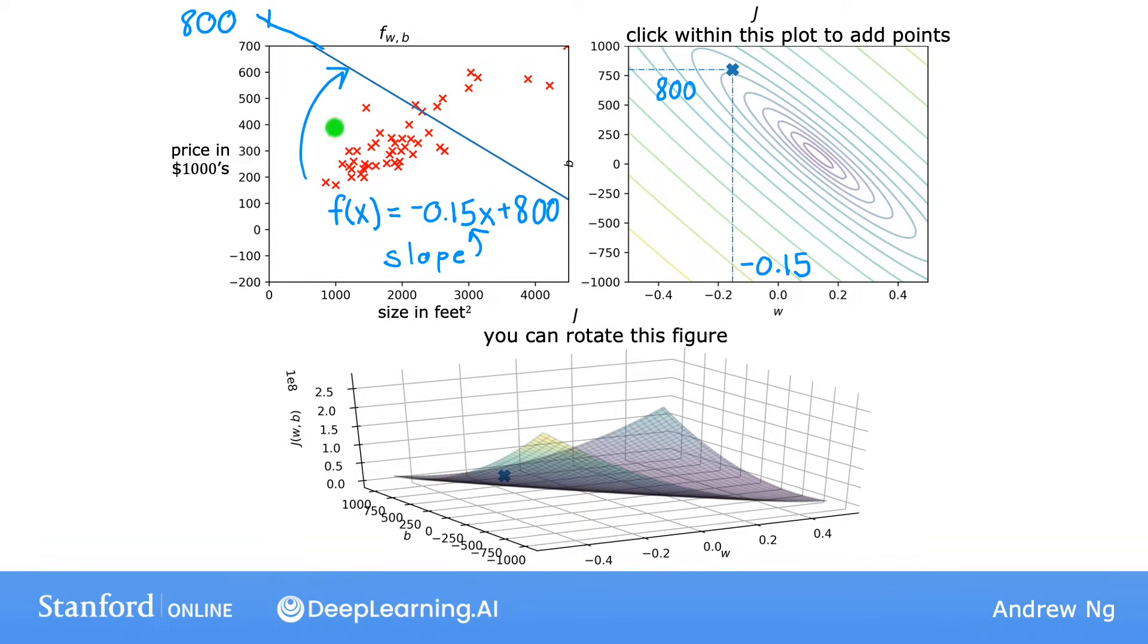Now, if you look at the data points in the training set, you may notice that this line is not a good fit to the data. For this function f of x, with these values of W and B, many of the predictions for the value of y are quite far from the actual target value of y that is in the training data. Because this line is not a good fit, if you look at the graph of J, the cost of this line is out here, which is pretty far from the minimum. It's a pretty high cost because this choice of W and B is just not that good a fit to the training set.